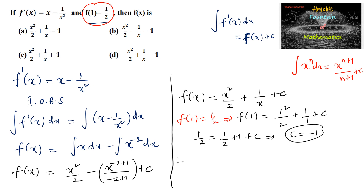Substituting back again, we get f(x) equals x squared by 2 plus 1 upon x minus 1. So the given function f(x) is x squared by 2 plus 1 upon x minus 1, which is option A.